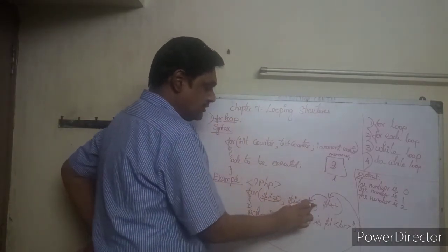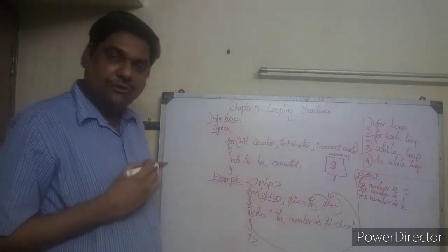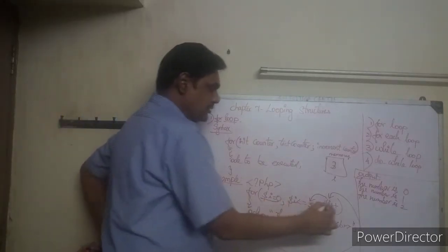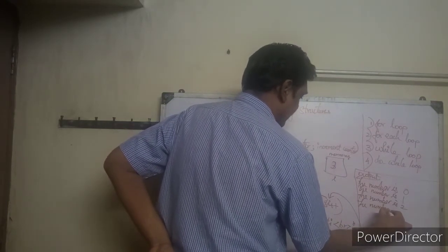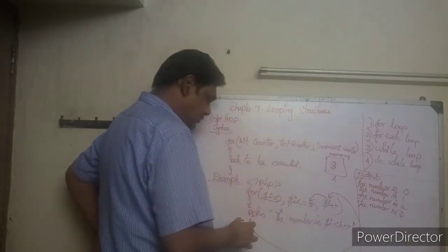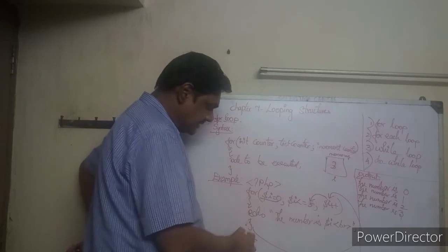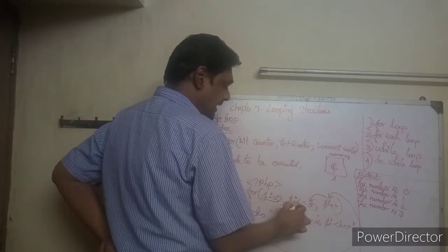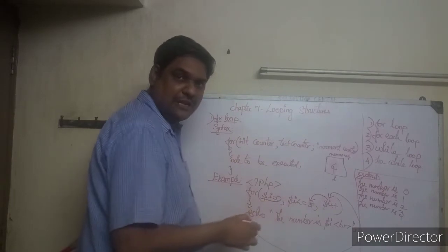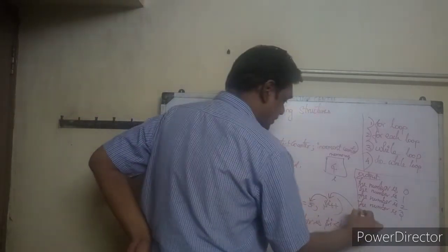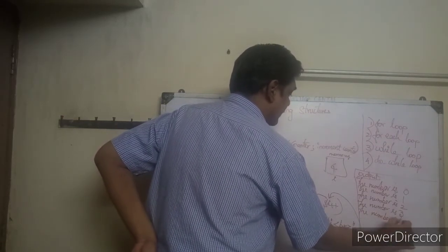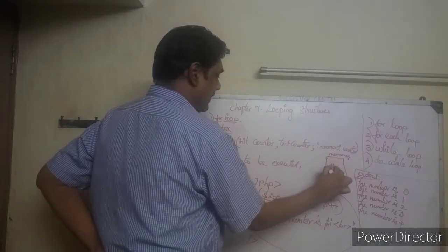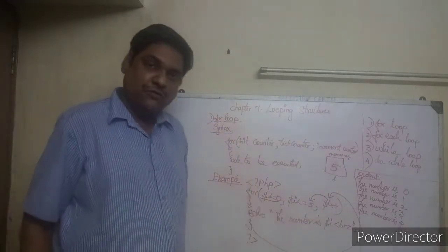Again check: is `i` less than or equal to 5? `i` is 3. Is 3 less than or equal to 5? True. It prints 'The number is 3'. Close curly braces, `i` becomes 4. Is 4 less than or equal to 5? True. Prints 'The number is 4'. Close curly braces, `i` becomes 5. Is 5 less than or equal to 5? True — equal to is also true. So it prints 'The number is 5'.